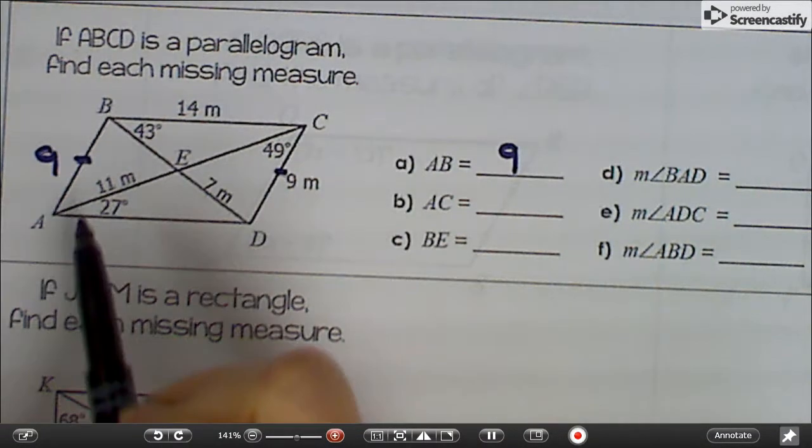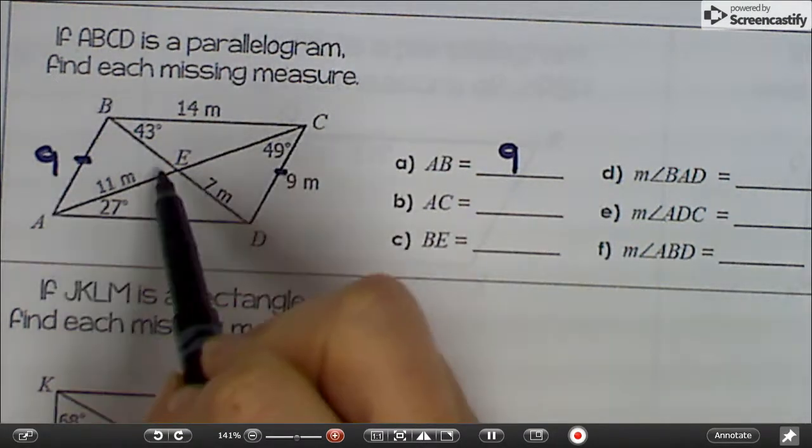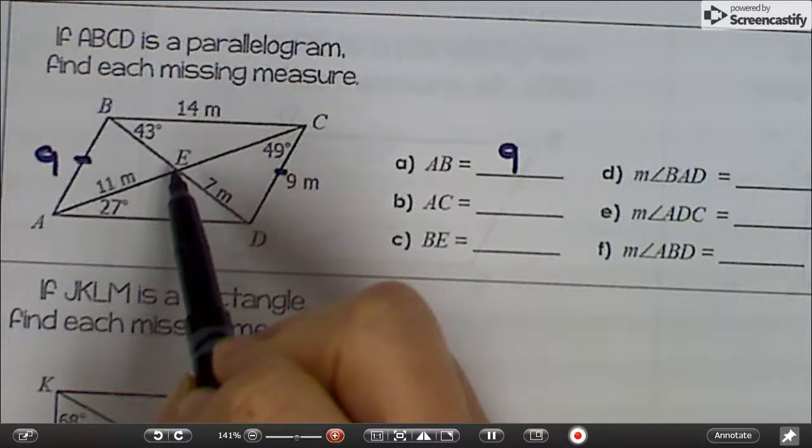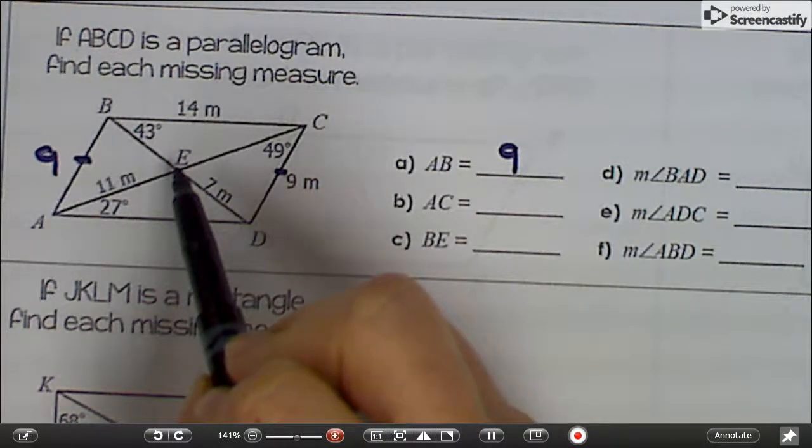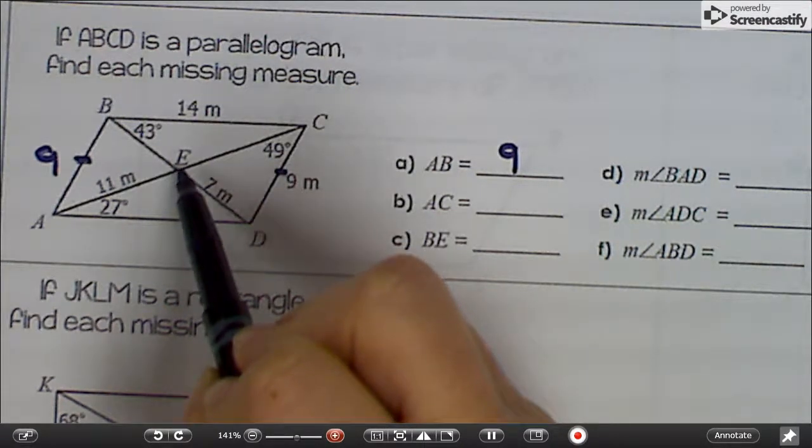AC, the diagonal, is kind of weird because they only give us part of it right here. This is 11. But over on the other side, we talked about how in a parallelogram diagonals bisect each other. And hopefully you remember that bisect means cut in half.